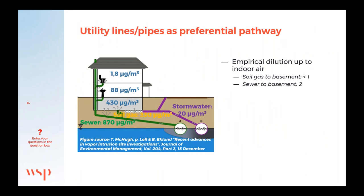Another problem you can have is utility lines or pipes acting as preferential pathways. In another example, we measured both in the basement, on the ground floor, on upper floors, and also in the soil gas, in the sewer lines, and in the stormwater pipes. Looking at these figures, you can see that it's probably not the soil gas that is the problem for vapor intrusion in this case — it's probably the sewer line that acts as a transport pathway.